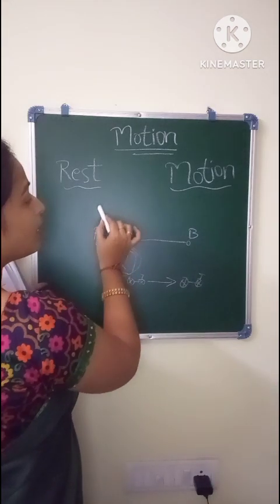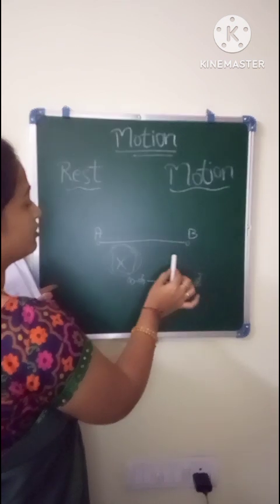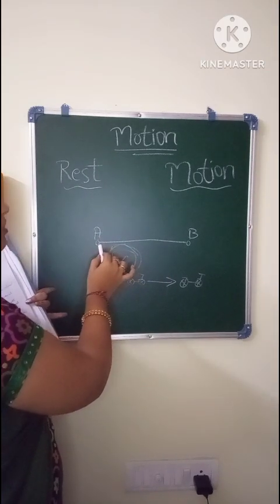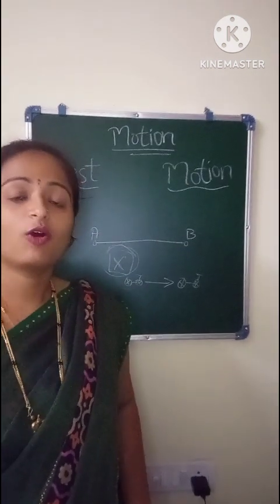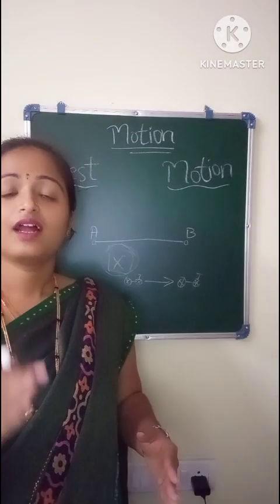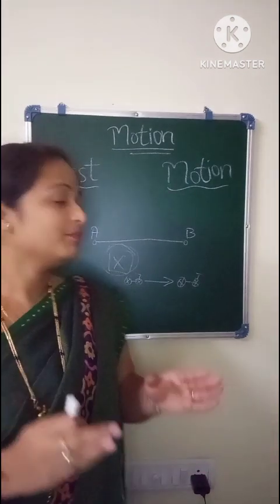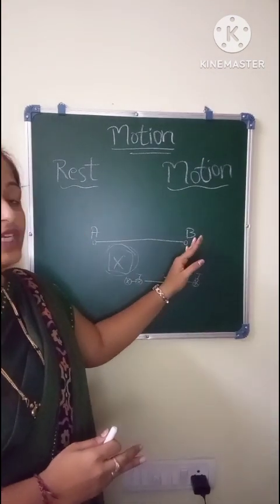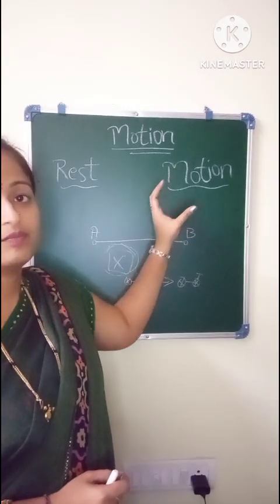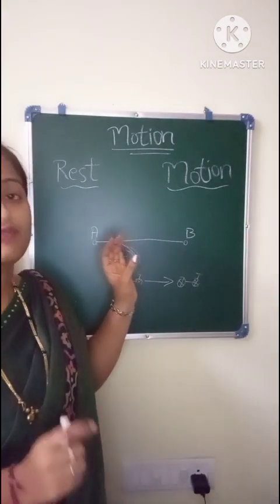We can say that if an object moves from point A to point B, then it is in motion. If it is at rest, it does not change its position from A. With respect to point A, if it is moving towards point B, then only it is said to be in motion; otherwise it will be at rest.